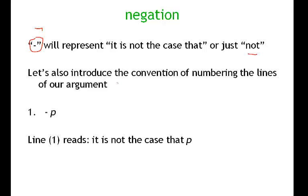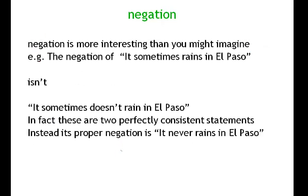At some points we're going to introduce a convention for numbering the lines in an argument. We'll introduce a number one, and here you'll see the negation of P, where P stands for a declarative sentence. So line one reads: it's not the case that P. It's important to recognize some features of the semantics of negation — negation is more interesting than you might initially imagine.